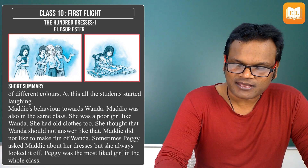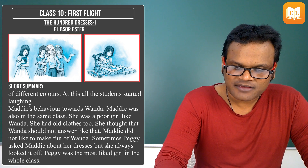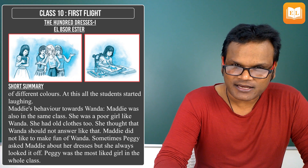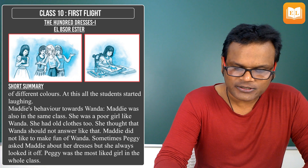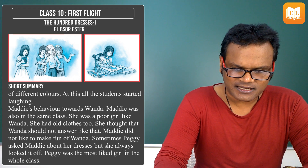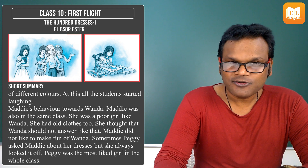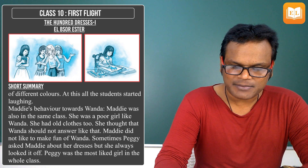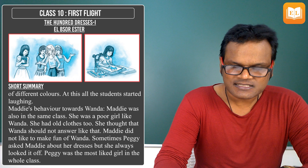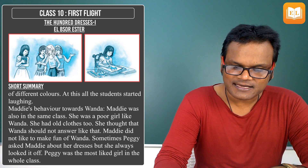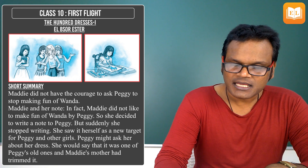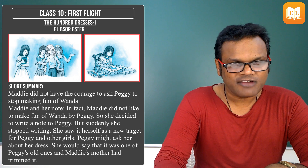At this, all the students started laughing. Maddie was also in the same class and she was a poor girl like Wanda. She had old clothes too. Maddie did not like to make fun of Wanda. Sometimes Peggy asked Maddie about her dresses, but she always avoided it. Peggy was the most liked girl in the whole class. Maddie did not have the courage to ask Peggy to stop making fun of Wanda.